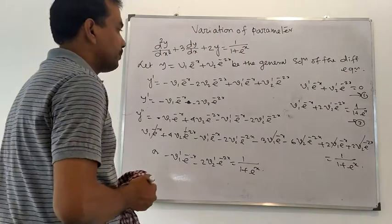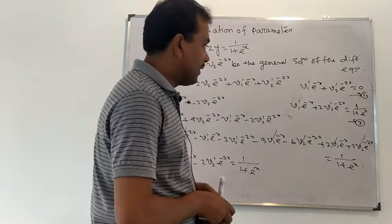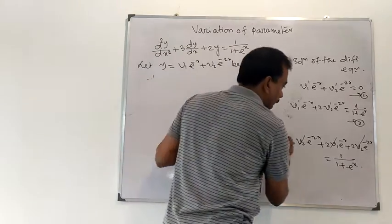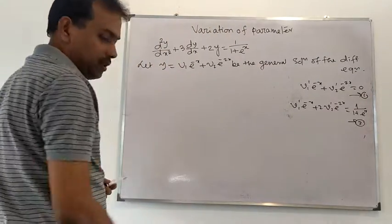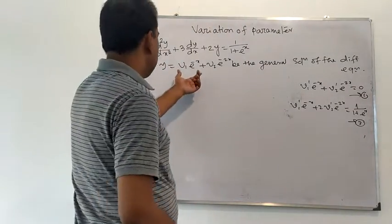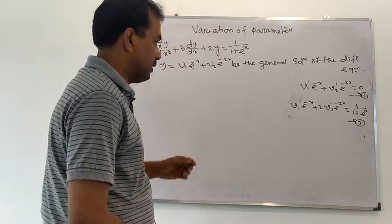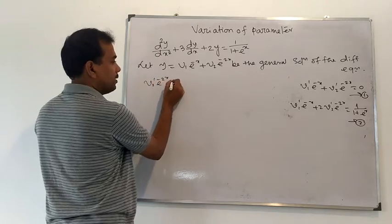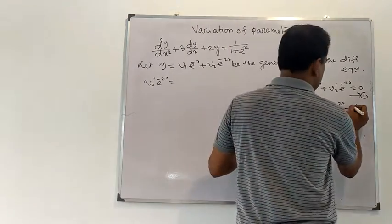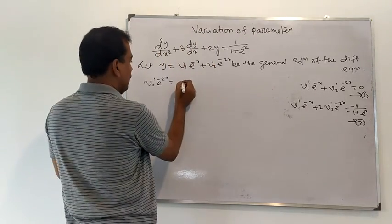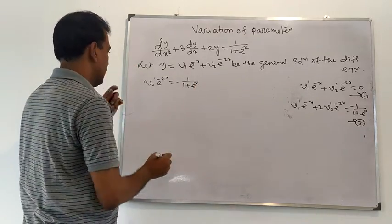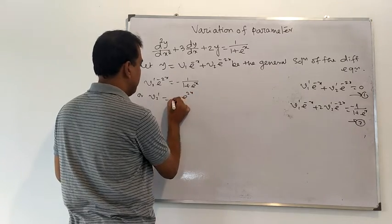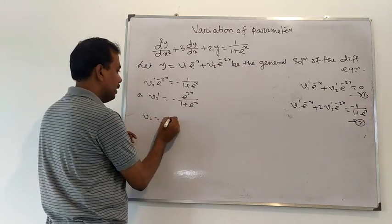Solving these equations, we get v1' and v2'. Subtracting equation 1 from equation 2, we get v2'·e^(−2x) = −1/(1 + e^x), so v2' = e^(2x)/(1 + e^x). Now integrating to find v2.